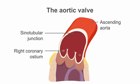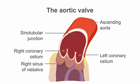Below the sinotubular junction, we can see the right coronary ostium and the left coronary ostium arising from the right sinus of Valsalva and the left sinus of Valsalva respectively. The sinuses of Valsalva represent the area immediately superior to all three of the aortic valve leaflets.